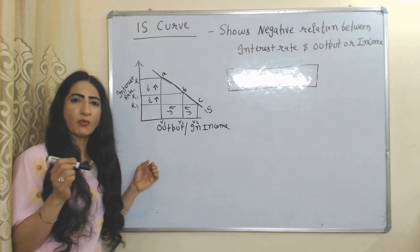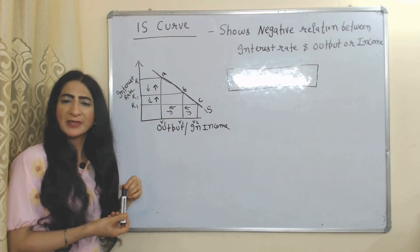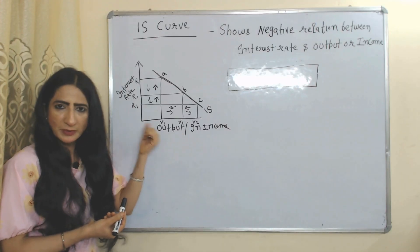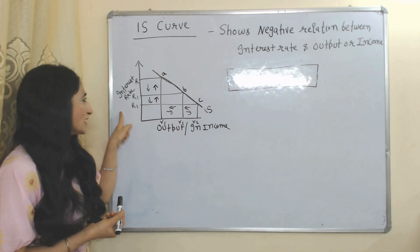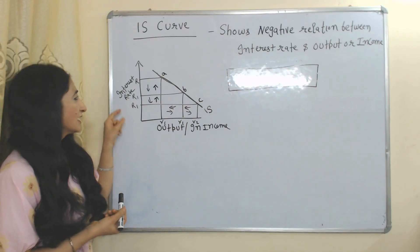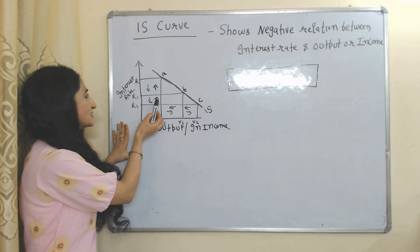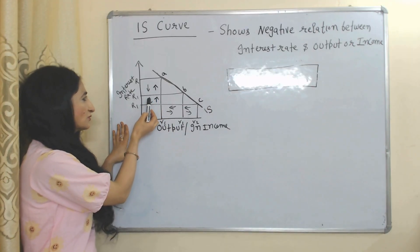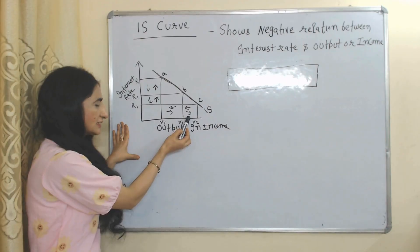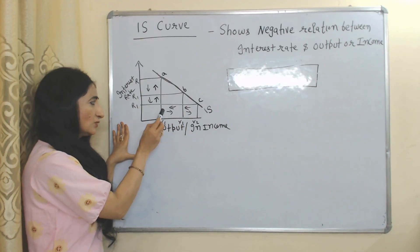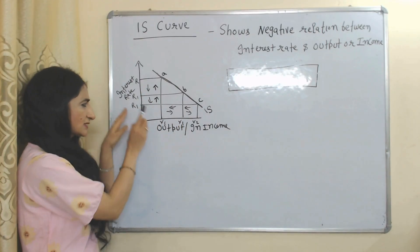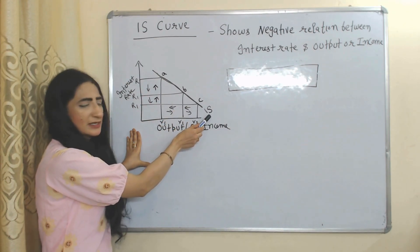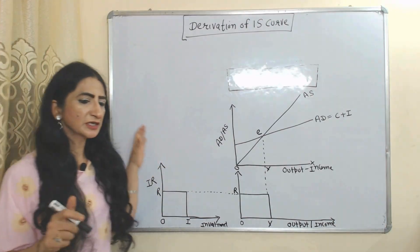The IS curve shows an inverse relationship between interest rate and output. On the X axis we have output and on the Y axis we have interest rate. As interest rate increases, output falls; and as interest rate falls, output increases. So the IS curve is a downward-sloping curve representing this inverse relationship.